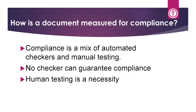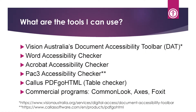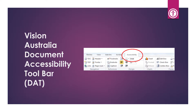How is a document measured for compliance? We just walked the tags tree, but an automated checker won't know that's wrong. That's why you use a mix of automated compliance checkers and manual testing, because no checker can guarantee compliance on its own. Human testing is a necessity — you have to visually inspect to make sure headings are assigned as headings, alt text is meaningful and specific, and footnotes are being voiced correctly. Tools like Vision Australia's Document Accessibility Toolbar plug-in for Word give quick access to accessibility features.